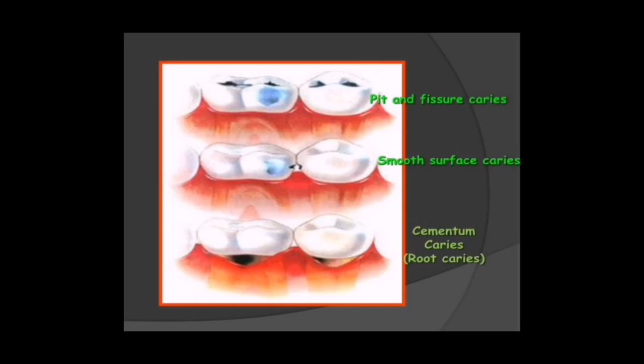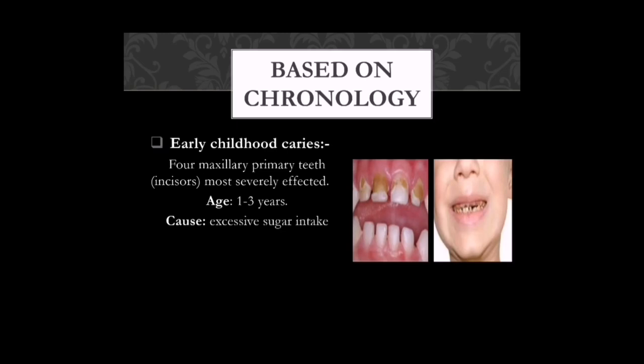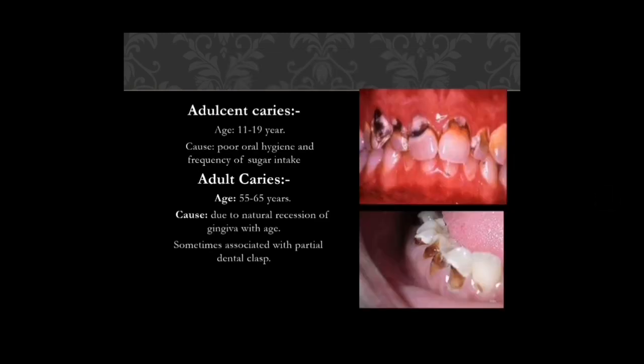Based on chronology, early childhood caries mainly involve the four maxillary primary teeth, with age of occurrence between one to three years. The cause is excessive sugar intake. A clinical picture shows early childhood caries in the deciduous dentition.